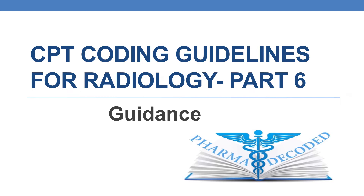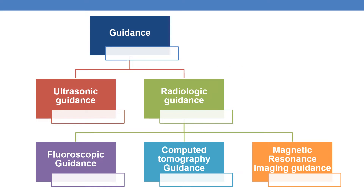Hello everyone. Now let us discuss CPT coding guidelines for radiology, part 6. In the current session, we will be focusing on guidance. Guidance is of two types: ultrasonic guidance and radiologic guidance. Radiologic guidance is further subcategorized into fluoroscopic guidance, computed tomography guidance, and magnetic resonance imaging guidance. We will discuss in detail each CPT of ultrasonic guidance and radiologic guidance.